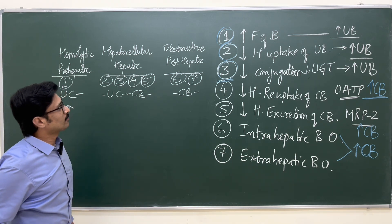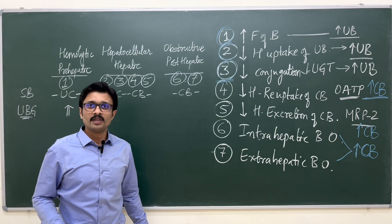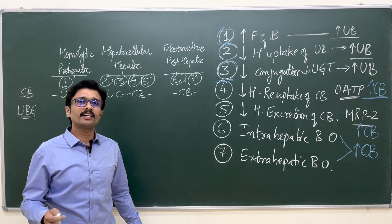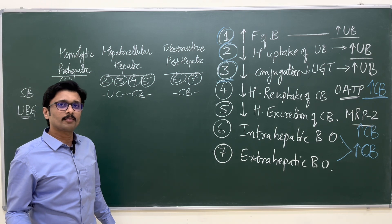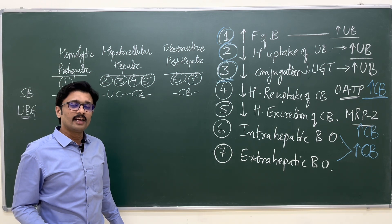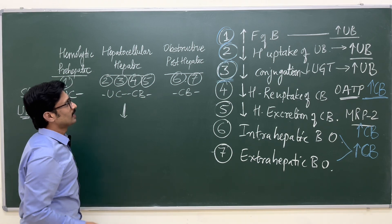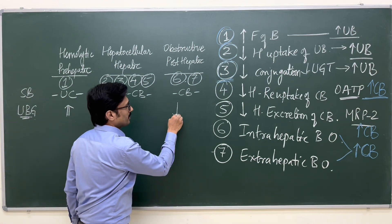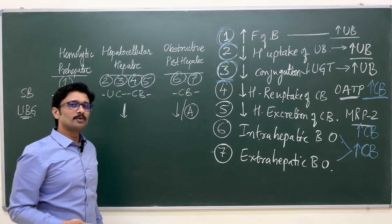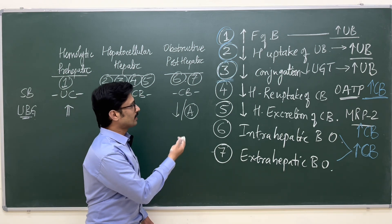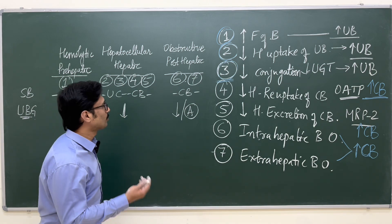In case of hepatocellular or obstructive jaundice, there is impairment in the conjugation process, so the conjugated bilirubin excreted into the bile is less. When there is decreased conjugated bilirubin reaching the bile and the intestine, urobilinogen formation is also reduced. If there is complete obstruction, it can be either reduced or even complete absence of urobilinogen formation — no urobilinogen at all.